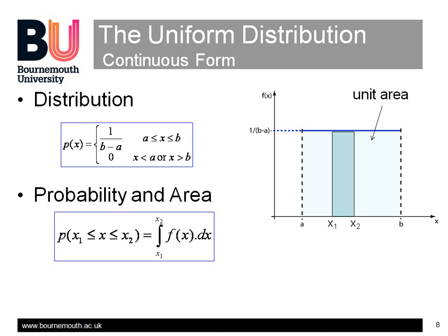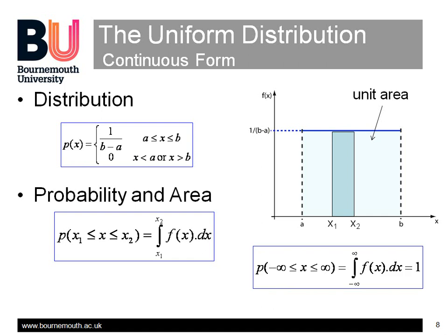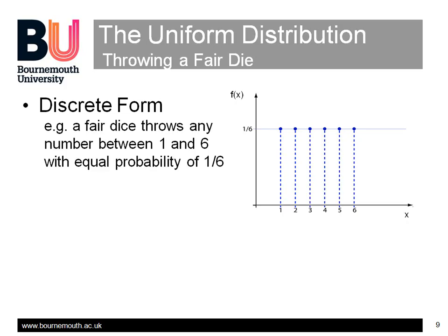It's again certain that x is a value between plus and minus infinity. The discrete random variable takes specific values only. For die-throwing, the function comprises the dots with f equals 1 upon 6 at the face values of 1 to 6. It's a bit of a problem to add up areas under dots to calculate probabilities, but as is often the case for discrete systems, the magic Dirac function delta x minus i comes to the rescue.